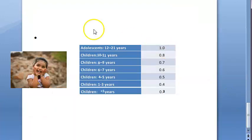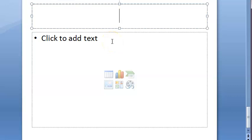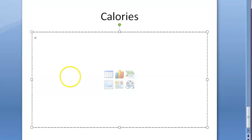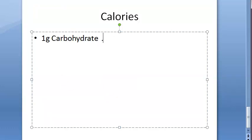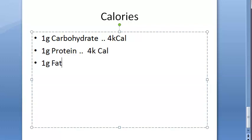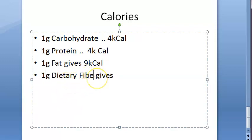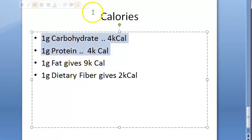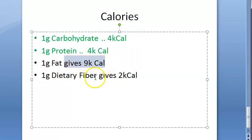Important caloric values to remember: one gram of carbohydrate gives 4 kilocalories, one gram of protein gives 4 kilocalories, one gram of fat gives 9 kilocalories, and one gram of dietary fiber gives 2 kilocalories. So fats give the most calories, protein and carbohydrate give 4 each, and dietary fiber gives the least.